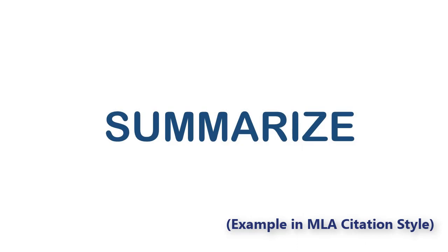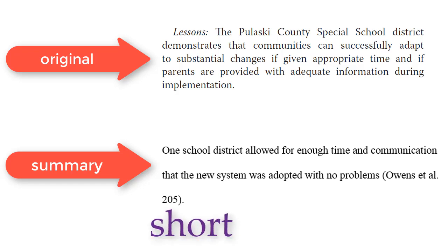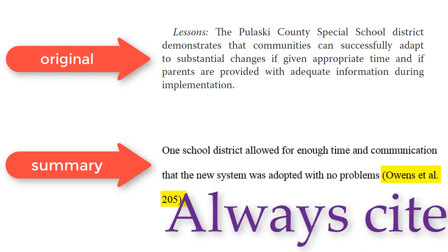Another way to use the article's information in your paper is by summarizing. A summary is a short breakdown of information you find in your source material, like an article or book. When you summarize a source, you express another writer's ideas in your own words, condensing the author's key points and using fewer words than the author — think short and simple. When you summarize, you still want to cite your source in the text and add the reference to your works cited or reference page.